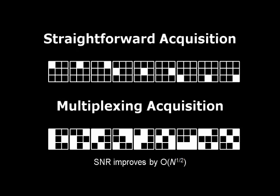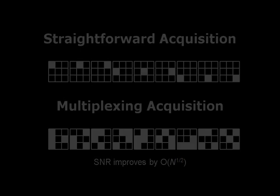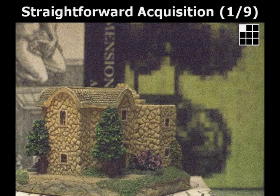Specifically, in each exposure, multiple samples are aggregated and then captured by opening many regions on the aperture. The individual samples are later obtained by demultiplexing.